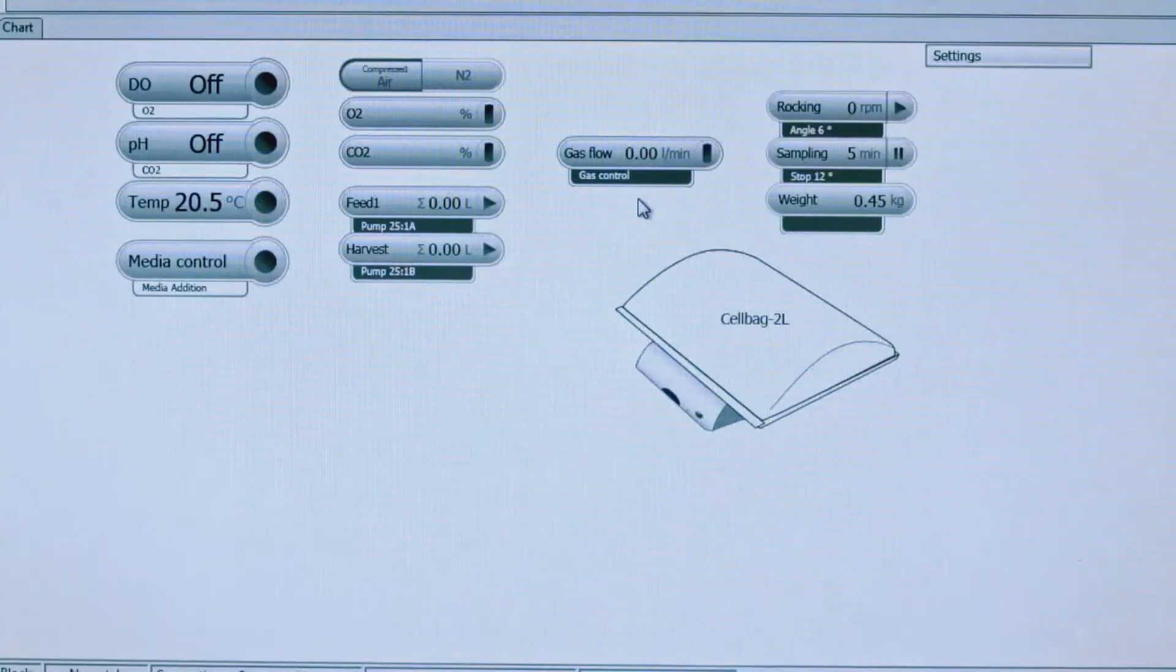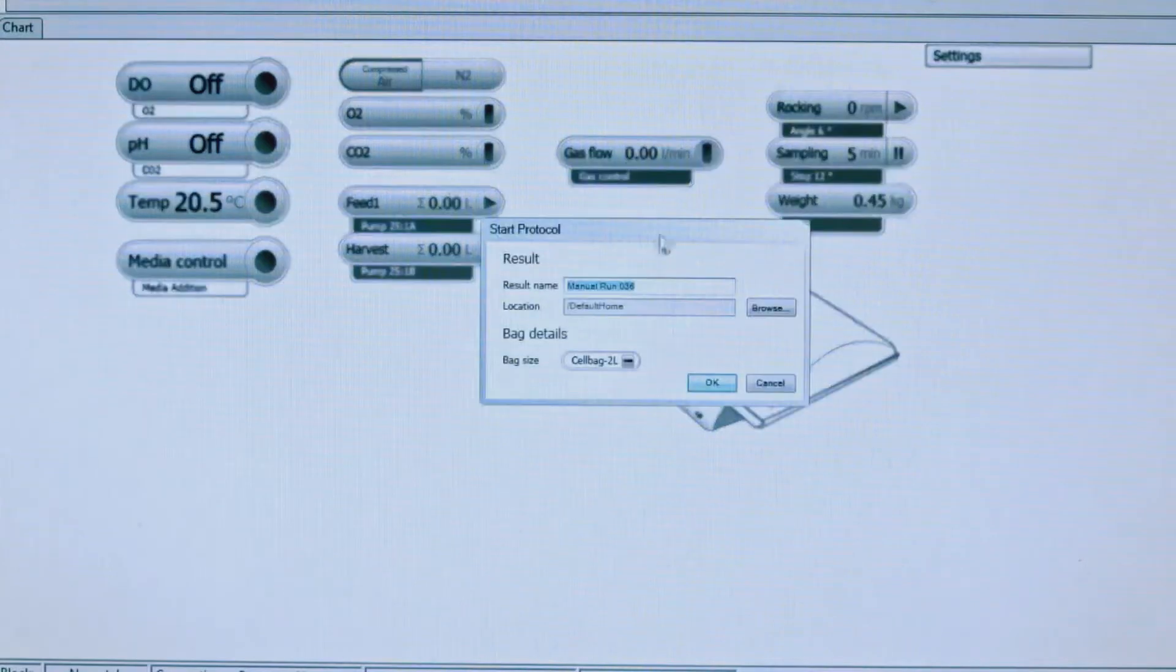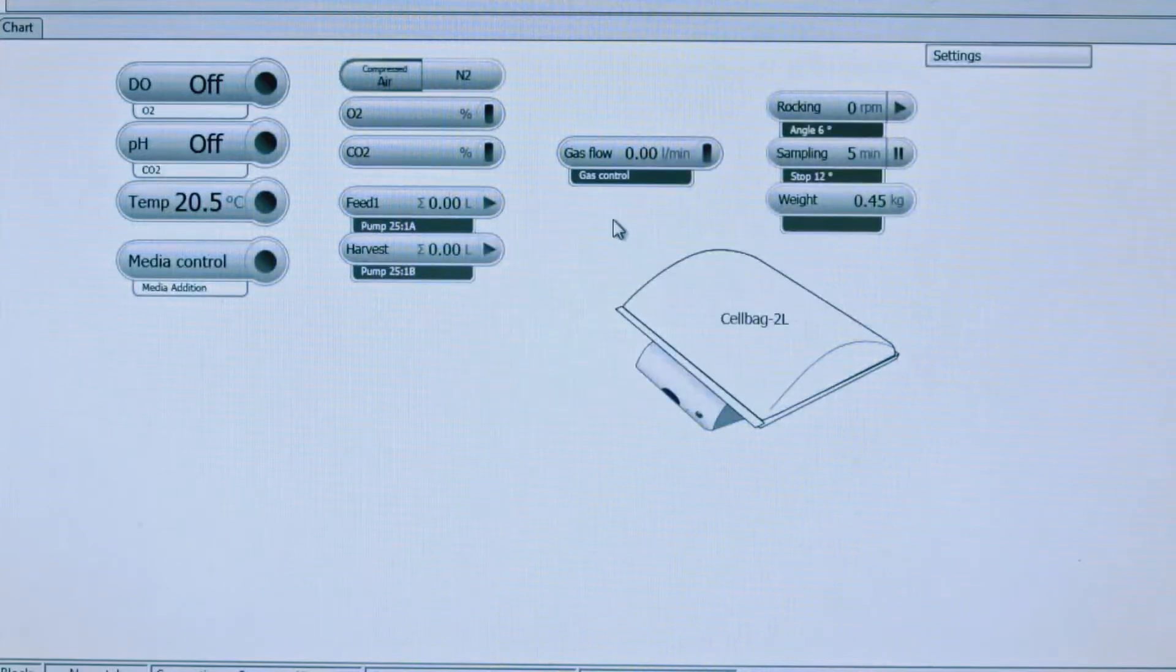To start a manual run within Unicorn, you can click on any of the buttons listed. We're going to click on gas flow and this will prompt you to name your run and define the bag size. We're just going to call this manual run and we have a 2 liter cell bag. Once you hit OK, the prompt that you want to start will turn on and you'll see that the gas flow will start. You can tell because it's green.